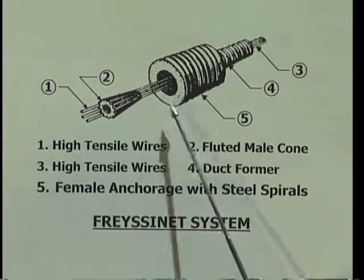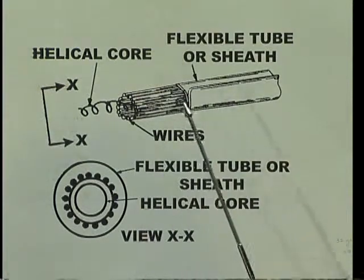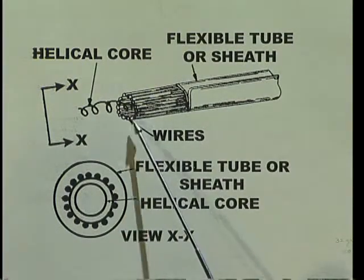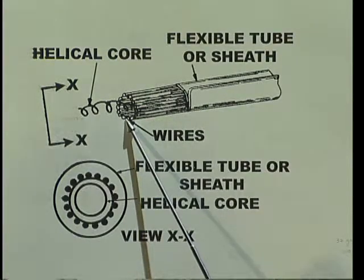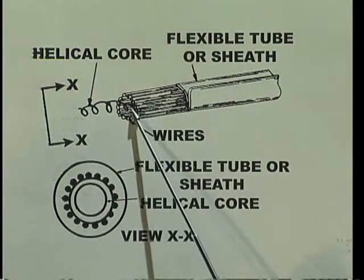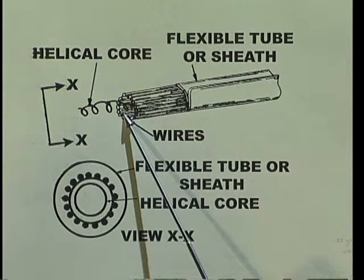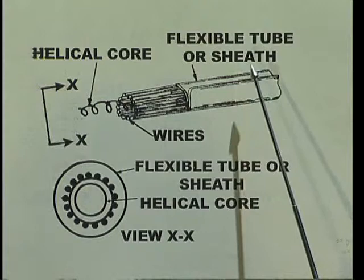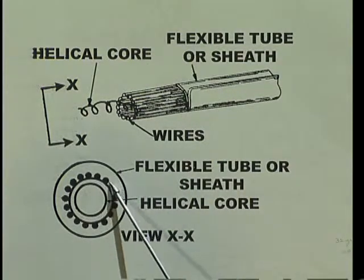Now let us see the description of each component one by one. This figure shows the Freesinet cable. The Freesinet cable consists of parallel wires. In case the diameter of the wire used is 5 mm, the number of wires in the cable may be 8, 10, 12, or 18. In case the diameter of the wire used is 7 mm, the number of wires will be 12. Inside the wires, a helical spring is placed which will maintain the required spacing between the wires. The cable consisting of these wires is encased in a flexible tube or a metal sheeting of 32 gauge metal sheet, which means it will be 0.2743 mm thick, and in the cross section the wires will be in the form of a ring.